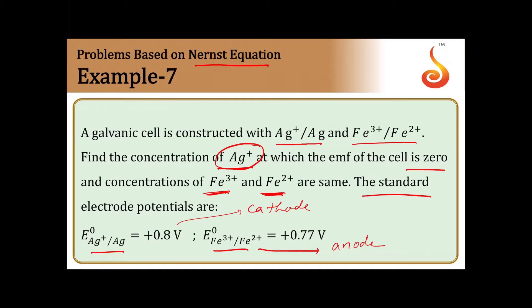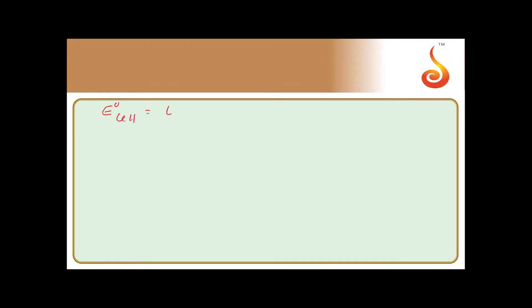Now we can find the E° of the cell. E°cell = E°cathode − E°anode. The cathode (silver) has E° = 0.80 V and the anode (iron) has E° = 0.77 V, so E°cell = 0.80 − 0.77 = 0.03 V.